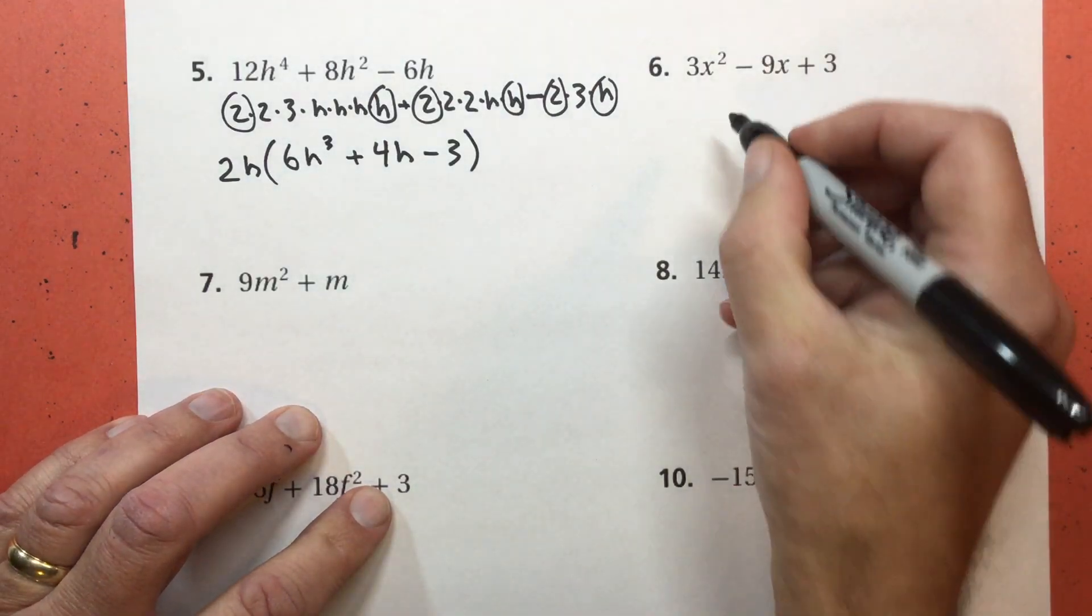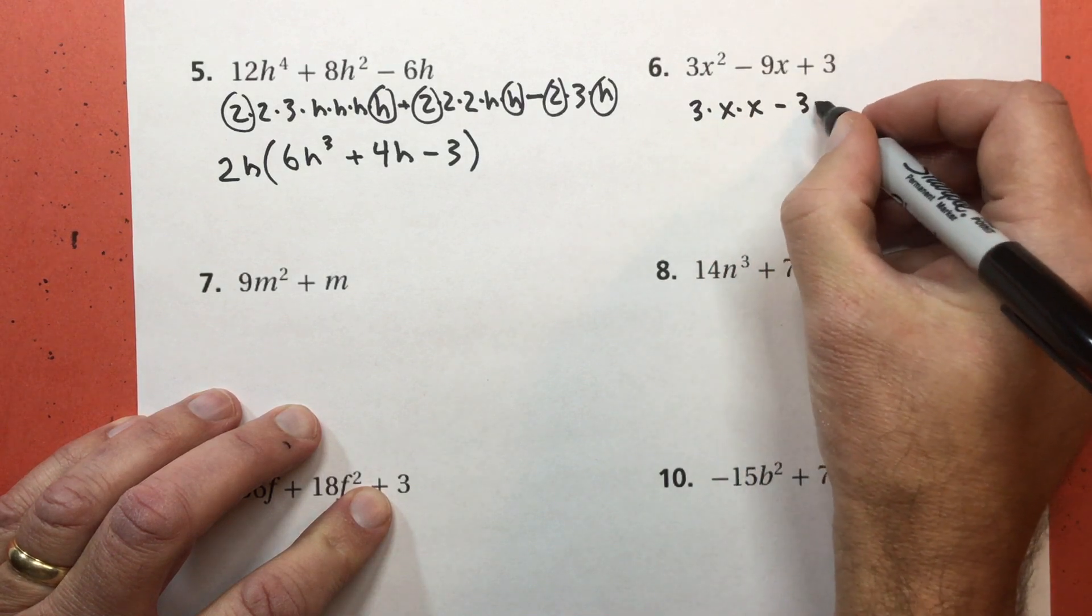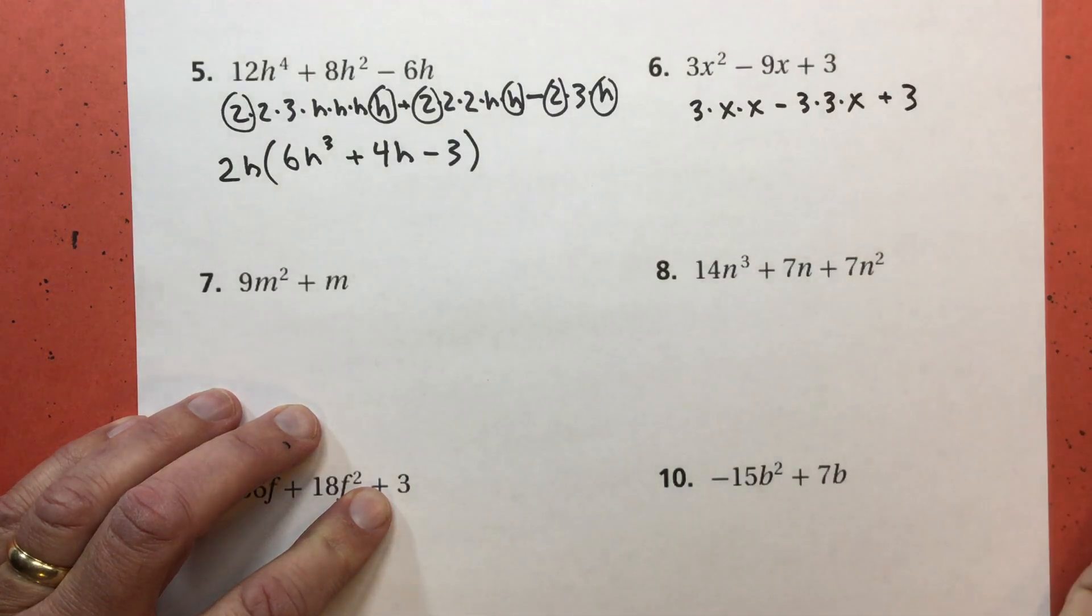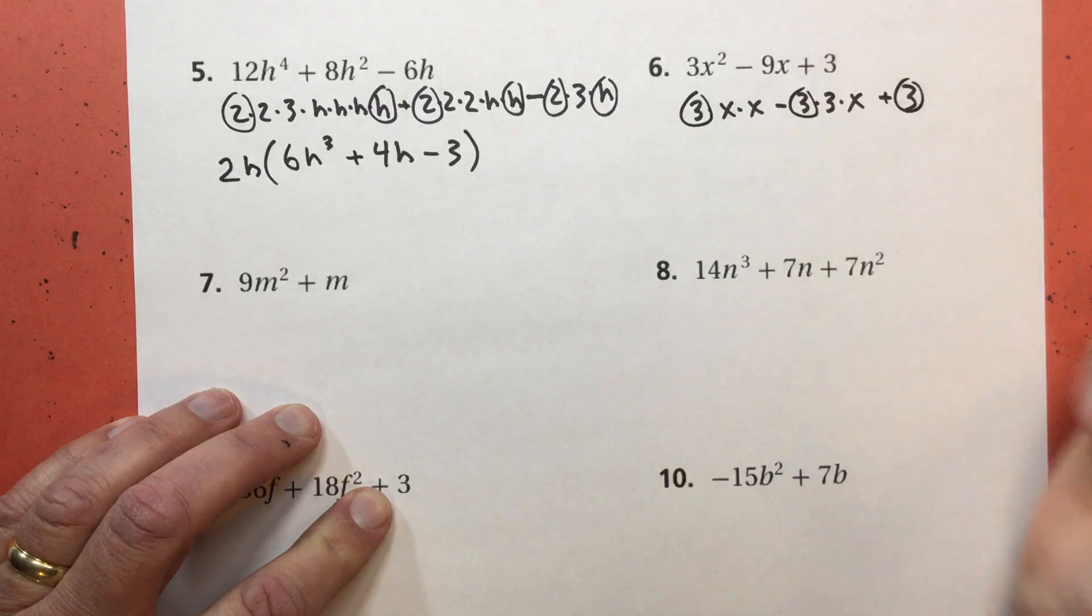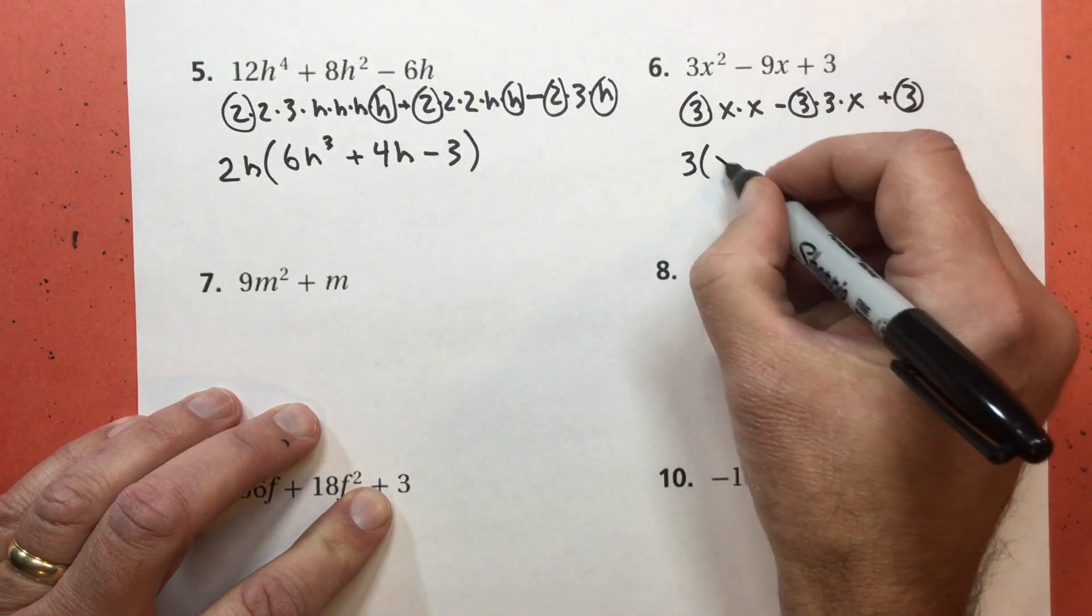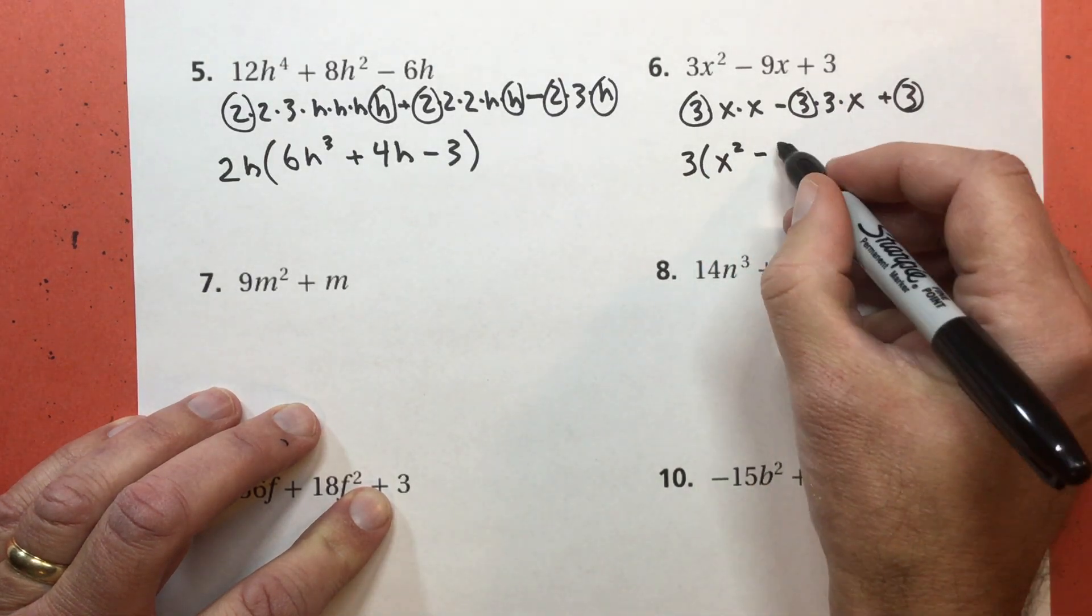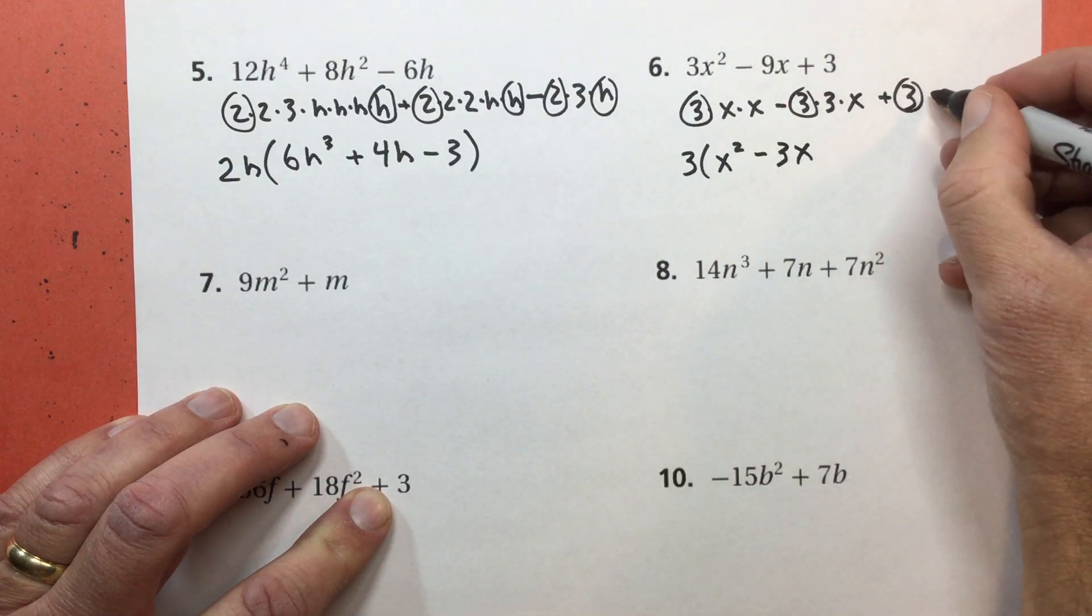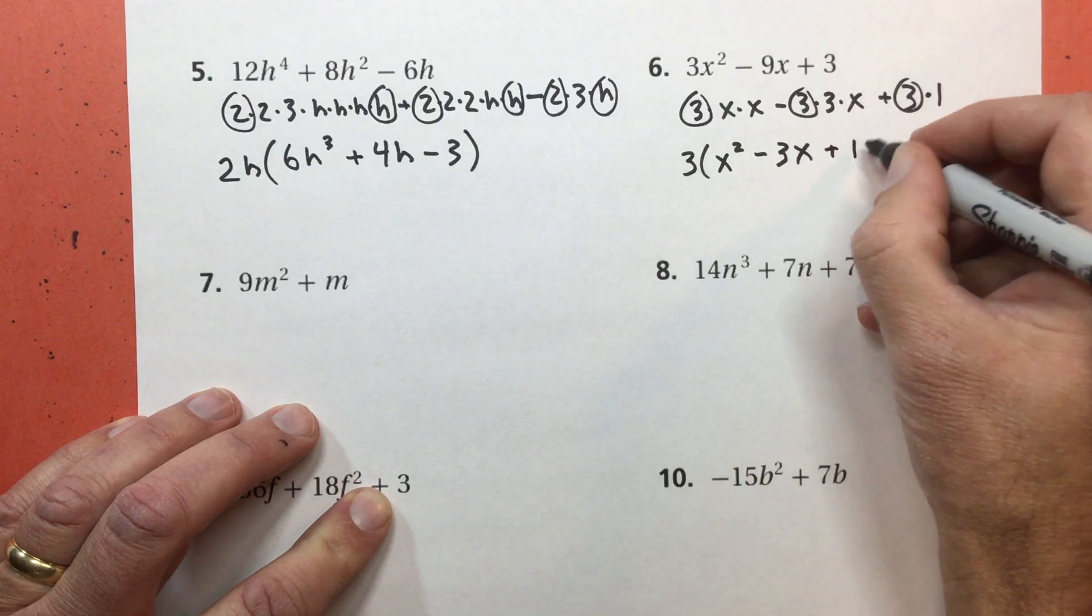Number 6. This is 3 times X times X. Subtract 3 times 3 times X. Plus 3. The only thing these terms have in common is the 3. So my greatest common factor is 3. X times X is X to the second power. Subtract 3 times X. And one more time, remember, if I take everything away, what got left behind was 1, not 0.